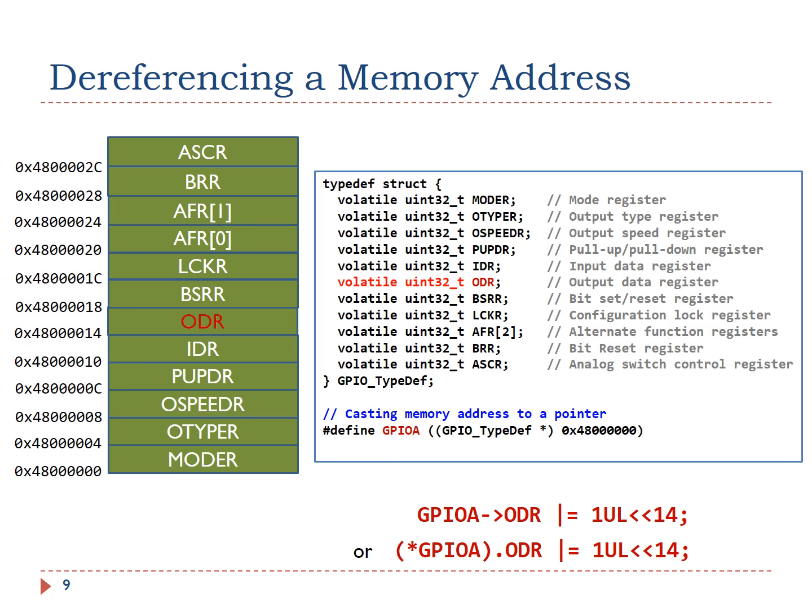We use a macro definition here to give a name to the struct pointer. Let's name the macro GPIOA. To set bit 14, we can use the membership operator to access the data output register ODR. We can either use the arrow operator or the dot operator to access the output data register ODR. These two C statements are equivalent.